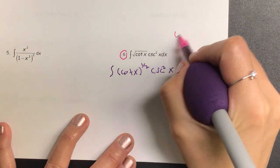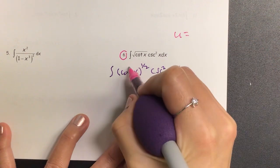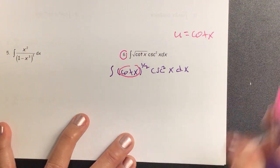Okay, so let's write on here, u is equal to this right here, cotangent of x.